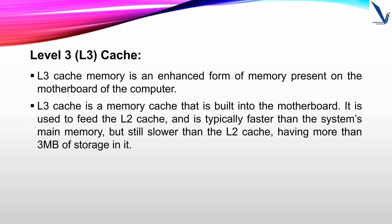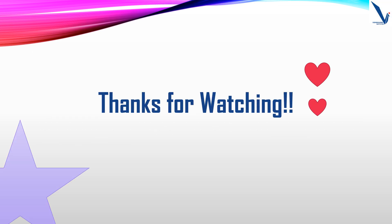Level 3 — L3 cache. L3 cache memory is an enhanced form of memory present on the motherboard of the computer. L3 cache is built into the motherboard and is used to feed the L2 cache. It is typically faster than the system's main memory, but still slower than the L2 cache, having more than 3MB of storage. Thank you.